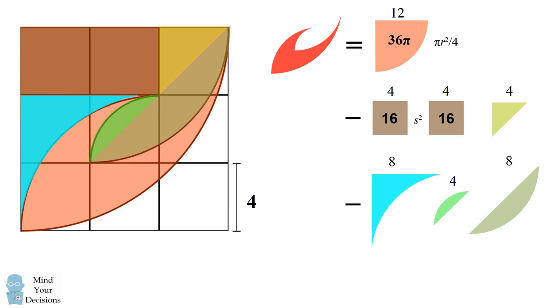The area of an isosceles right triangle is equal to its side squared divided by 2. This triangle has an area of 8.